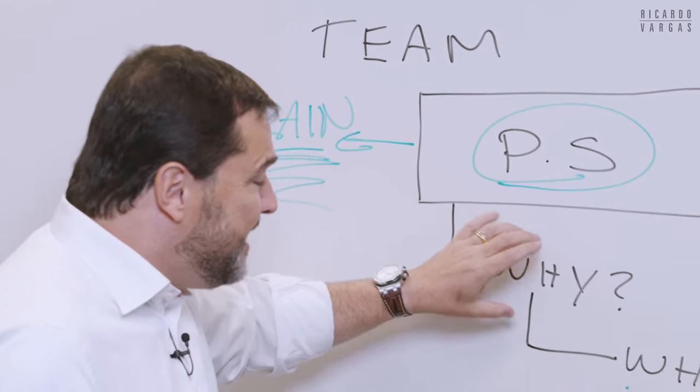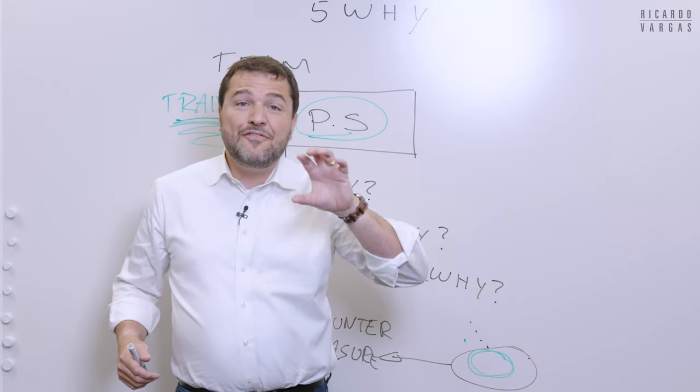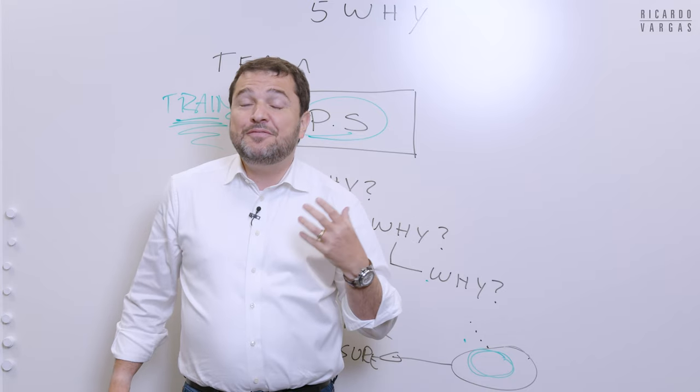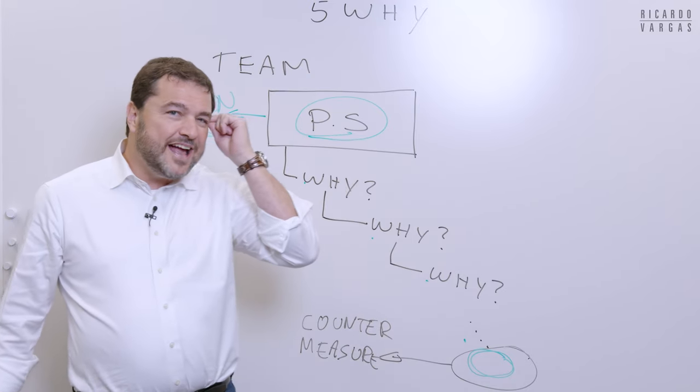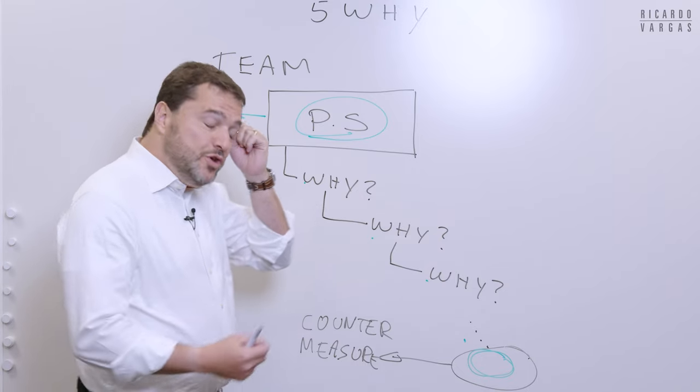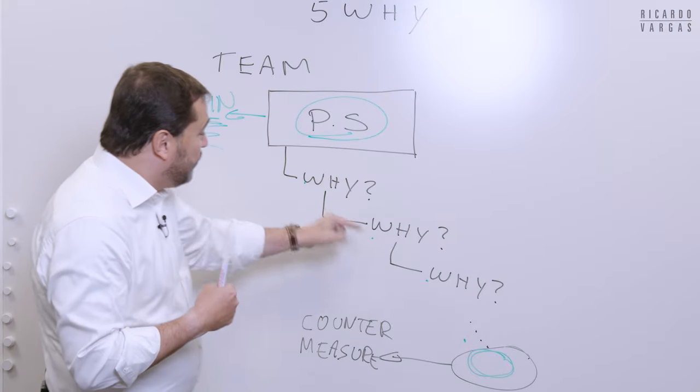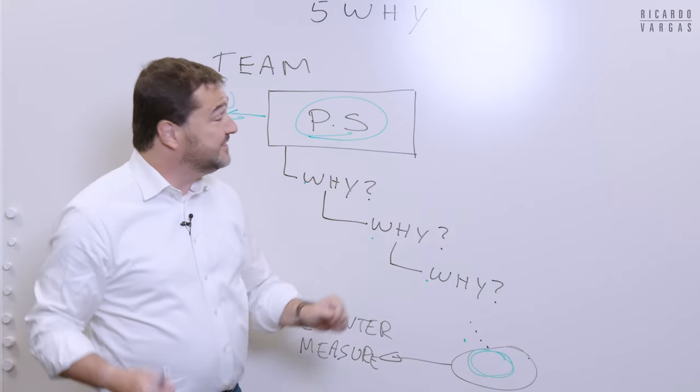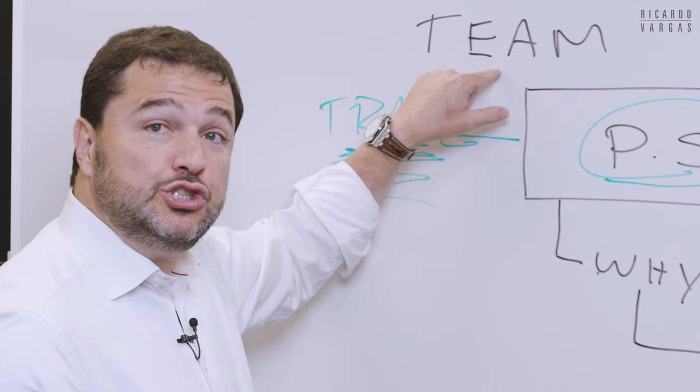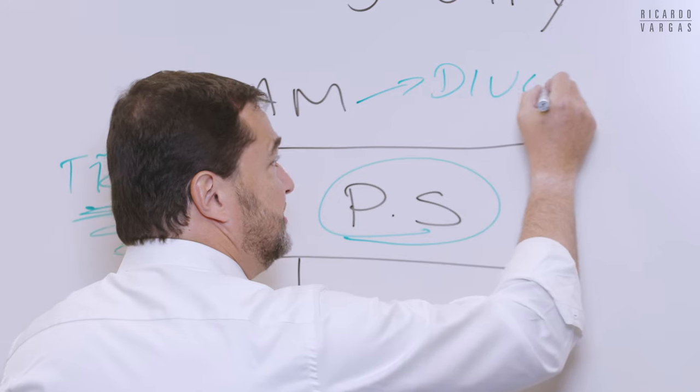And why you need to have a team. Because many times on this why, why, why, you will face a cognitive bias. And then maybe you already have in your mind, it's because of training. And you already come up with the answer you want to hear. And then you ask why just to justify that. This is why you should use a team. And most of the time you should use a diverse team.